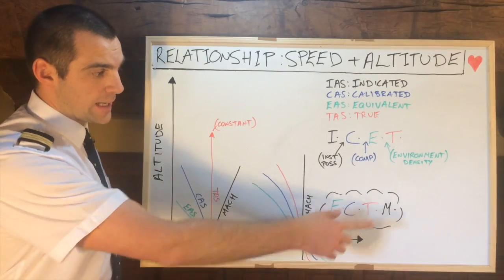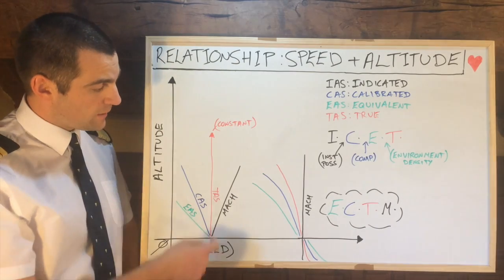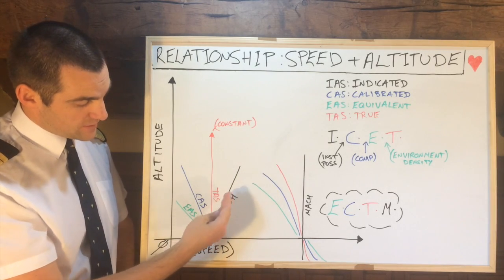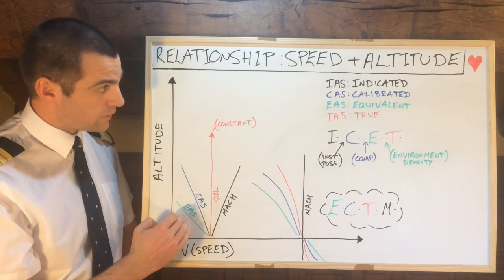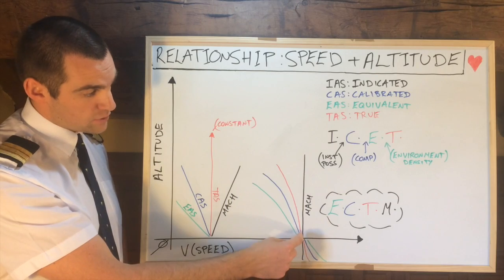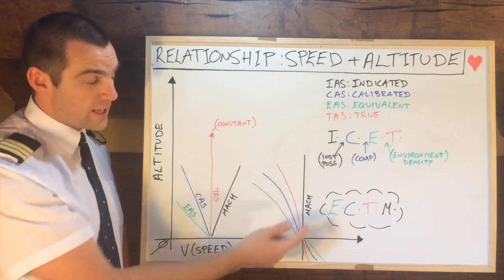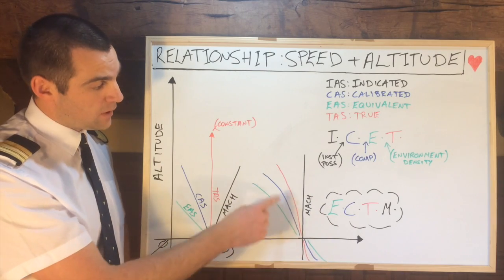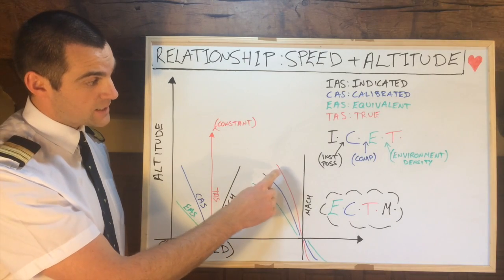Now, these graphs — Echo, Charlie, Tango, and Mike — they work for both climbing and descending. So if we go back to the same examples: if we are descending at a constant TAS, our Mach number is decreasing, but our indicated, calibrated, and equivalent are increasing. And the same with the Mach number — if we descend at a constant Mach number, you see our TAS is increasing. So the danger of that is, if we are descending at a constant Mach number, we may enter into a high-speed stall situation from our TAS increasing.